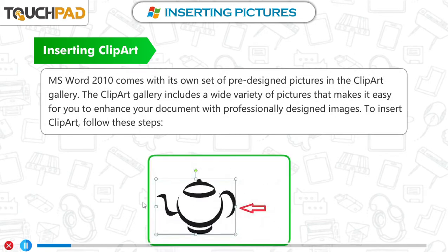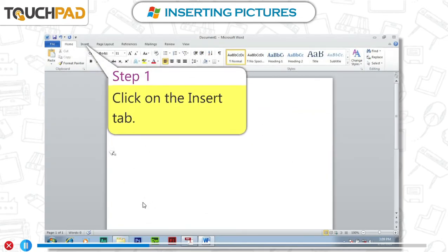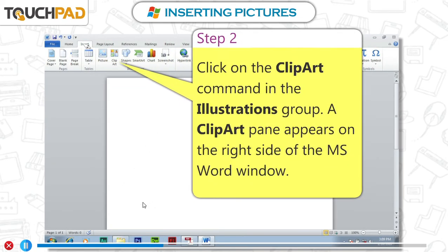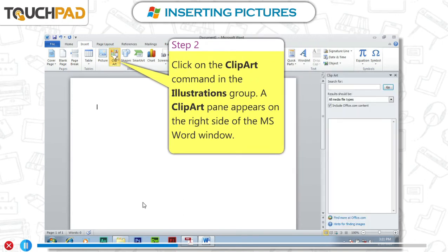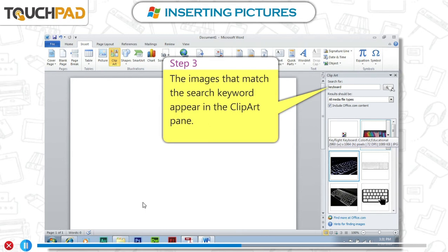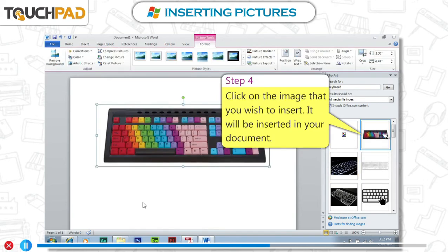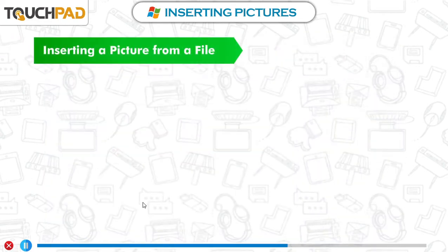Inserting Clip Art. MS Word 2010 comes with its own set of pre-designed pictures in the clip art gallery. The clip art gallery includes a wide variety of pictures that makes it easy for you to enhance your document with professionally designed images. To insert clip art, follow these steps. Step 1: Click on the Insert tab. Step 2: Click on the Clip Art command in the Illustrations group. A Clip Art pane appears on the right side of the MS Word window. Step 3: In the Search For box, type the desired keyword related to the image that you wish to insert. The images that match the search keyword appear in the Clip Art pane. Step 4: Click on the image you wish to insert. It will be inserted in your document.